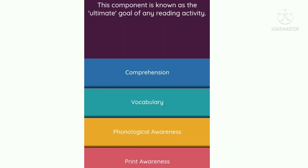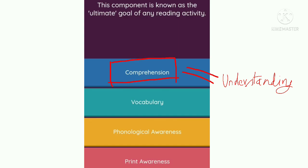Question 8: This component is known as the ultimate goal of any reading activity. Option A — comprehension. Option B — vocabulary. Option C — phonological awareness. Option D — print awareness. When you are reading, the most important thing is that you understand what you are reading. So the correct answer is option A, comprehension.